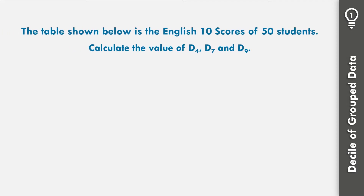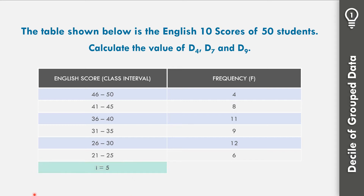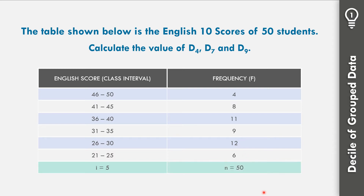Let us apply the formula in Example 1. The table shows English scores of 50 students. The class intervals and frequencies are: 46–50 (f=4), 41–45 (f=8), 36–40 (f=11), 31–35 (f=9), 26–30 (f=12), 21–25 (f=6). The class interval size equals 5. Adding all frequencies: 4+8+11+9+12+6 = 50, so N = 50.